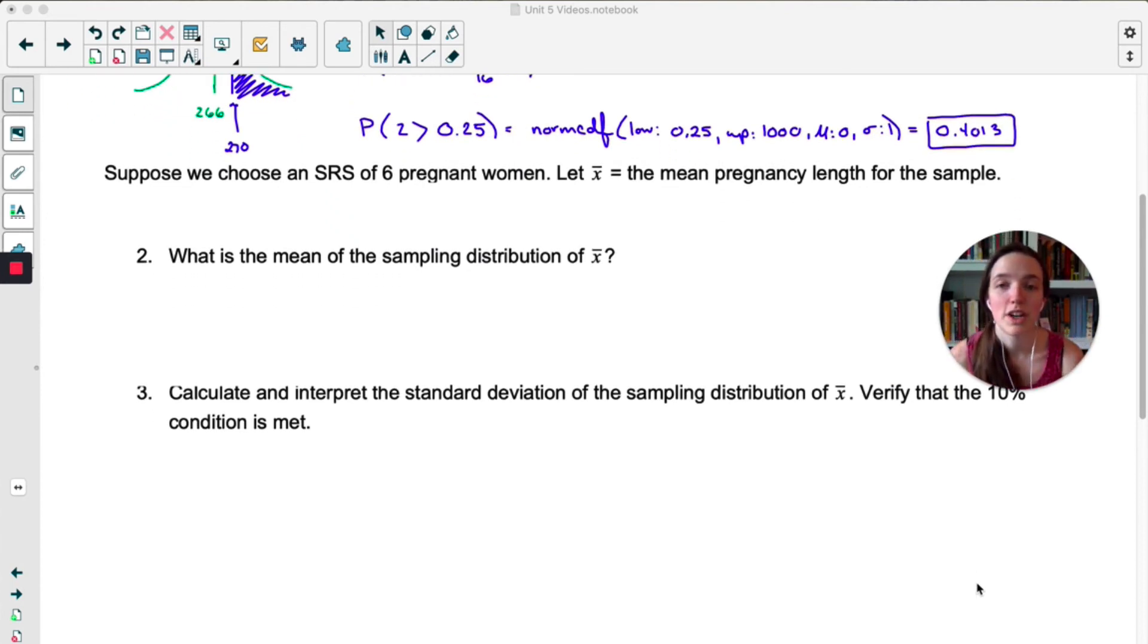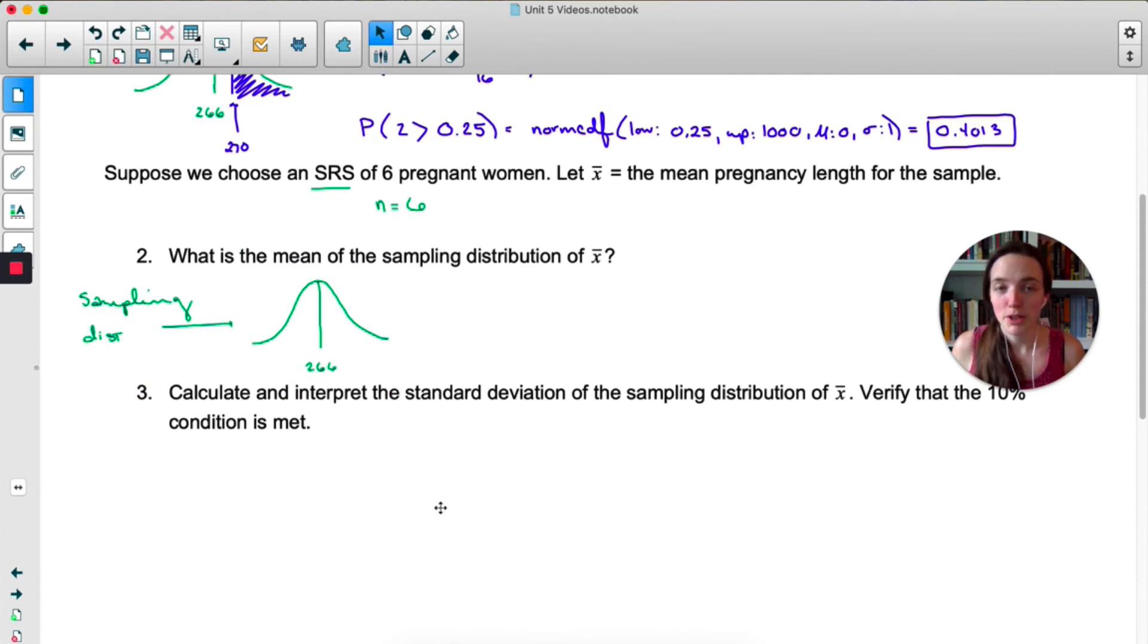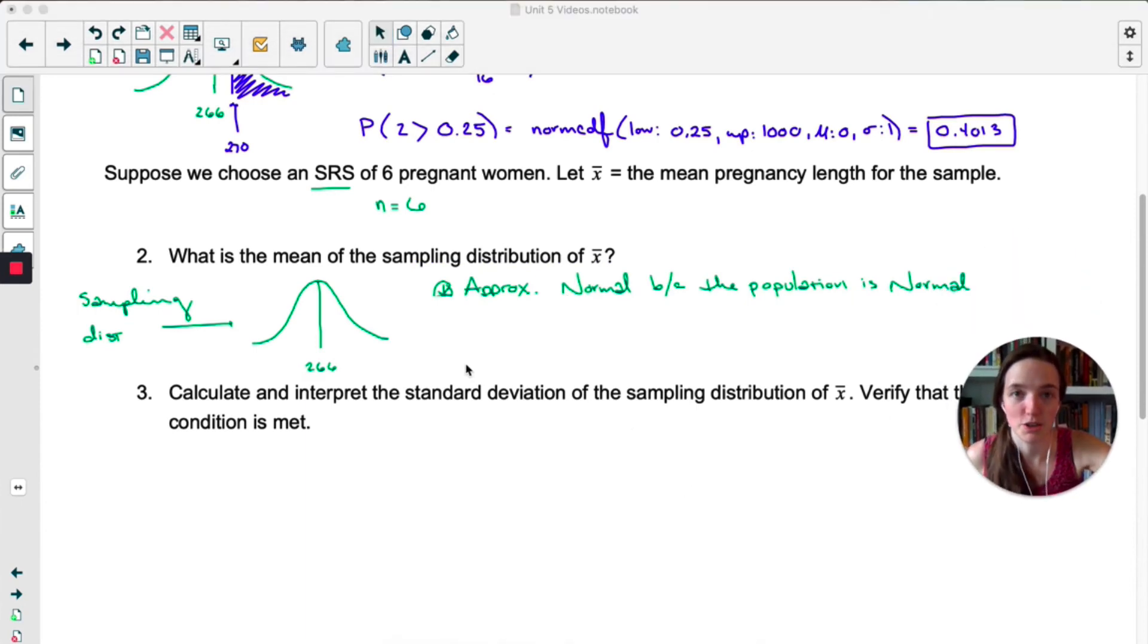Okay, now instead of choosing one random woman, we are taking a simple random sample of six pregnant women. So now we're looking at samples. N is six, sample size is six. Let x-bar be the mean pregnancy length for the sample. Okay, number two is asking us about the sampling distribution of x-bar. So a quick sketch. We know it's going to be normal because the population was normal. So that describes the shape. Approximately normal because the population was approximately normal. And for center, the mean of this sampling distribution is just μ, the mean of the population. So 266.